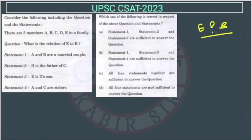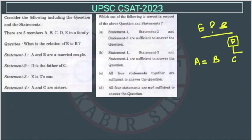Now, statement first: A and B are married. D is the father of C. E is D's son.